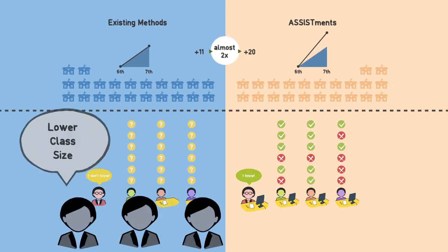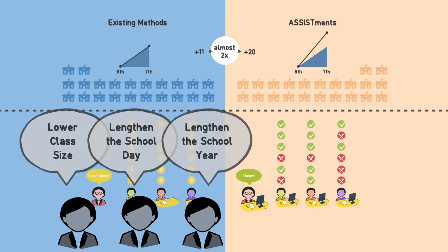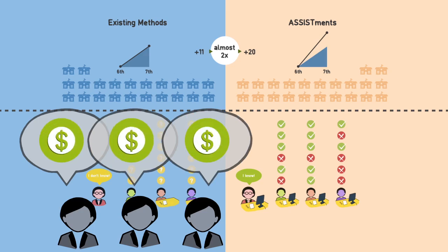Policymakers know that they can lower class size, lengthen the school day, or lengthen the school year to get these sorts of gains. But these solutions are incredibly cost prohibitive.